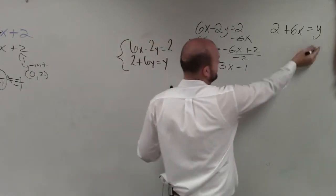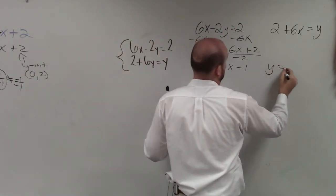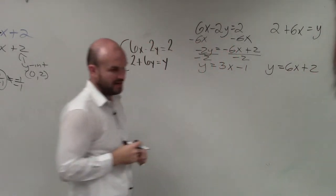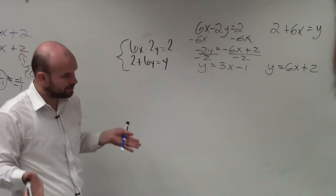This one is already solved for y, so I'm just going to rewrite it as y equals 6x plus 2. So now I've solved them both in slope-intercept form.